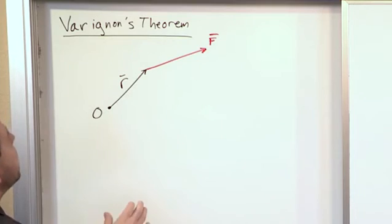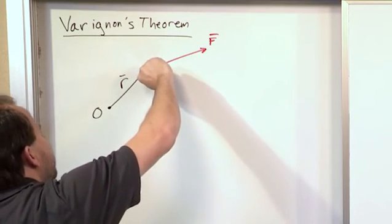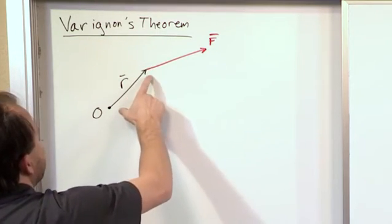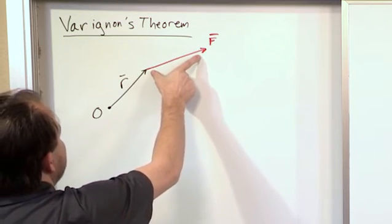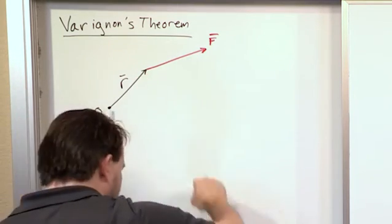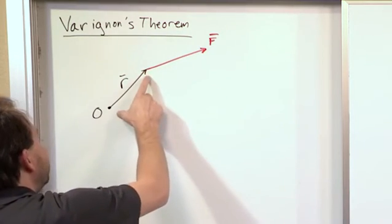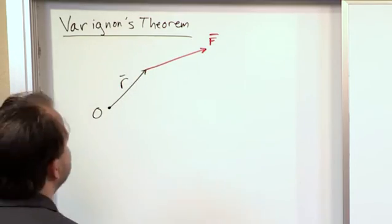Basically what you need to do is figure out the component of the force acting perpendicular to the moment arm. So if you could mathematically calculate—this is the vector here—the component acting perpendicular to this, that perpendicular component would be the part that spins it around.